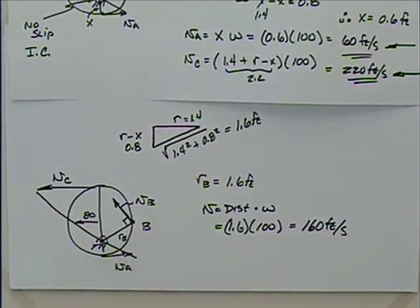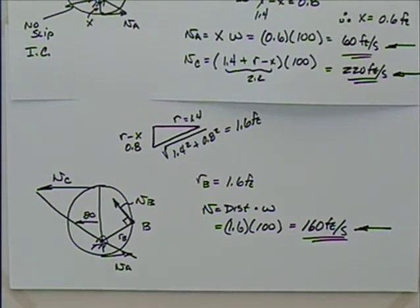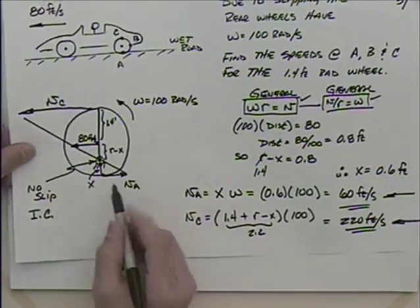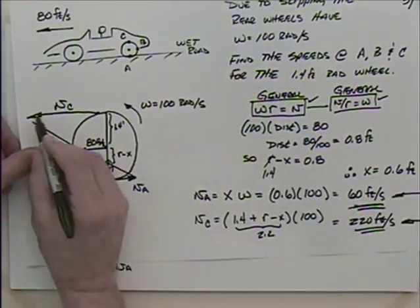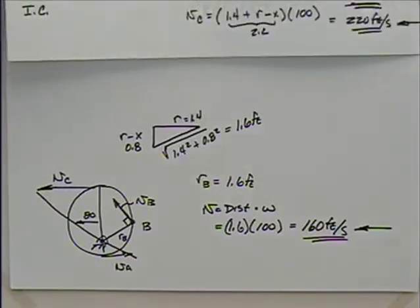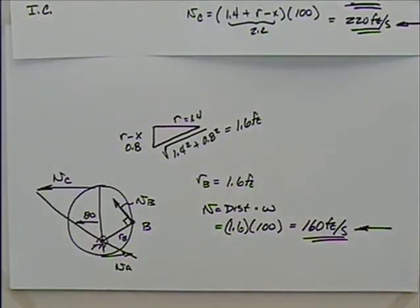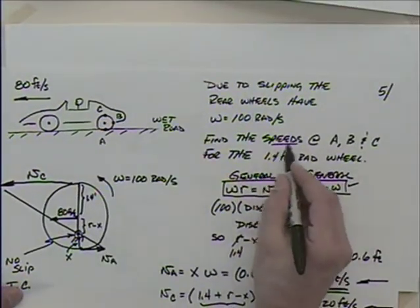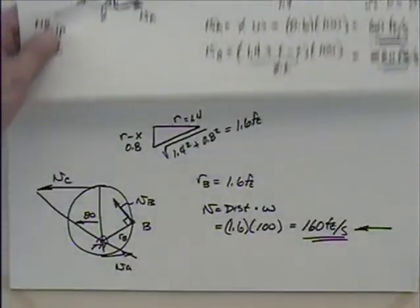You could go back through the geometry to find the exact angles for the vector, but the problem only asked for the speed magnitude. If I were to report these without the diagram, I'd need to note that velocity of A and velocity of C point in opposite directions. Since the problem asked for speeds, we just report the magnitudes: A = 60 ft/s, B = 160 ft/s, C = 220 ft/s.